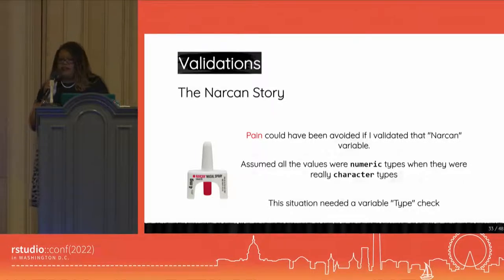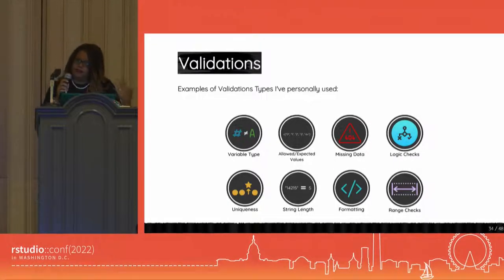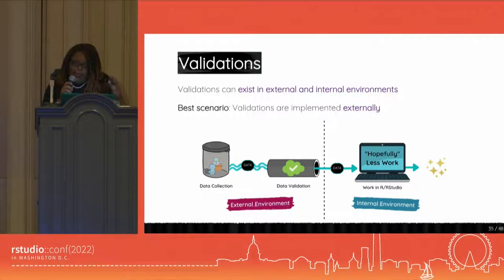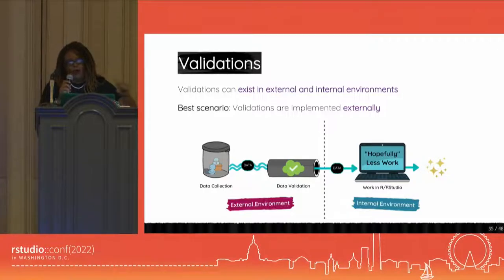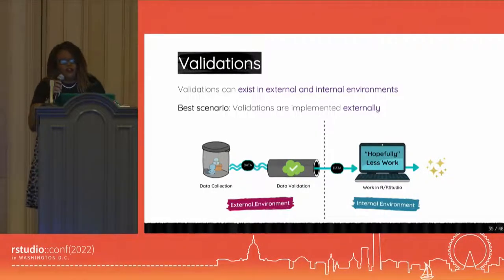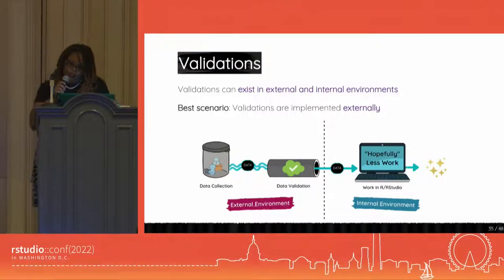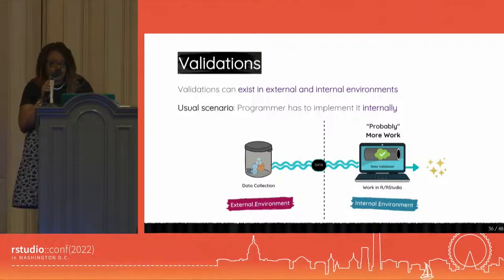So what I can do is give you some examples of types of validations I ran into. I won't go into all of these specifically — this is kind of here just for a think piece, so if any of you are doing the same, you can reference this. Something I learned on my own is that validations can exist externally and internally. In my opinion, the best scenario has always been that validations are implemented externally, whether at the point of data collection or whatever, because it might increase the chances of your data being workable and clean by the time it gets to you internally. But my usual scenario has been that there's no validation done and I have to do everything.